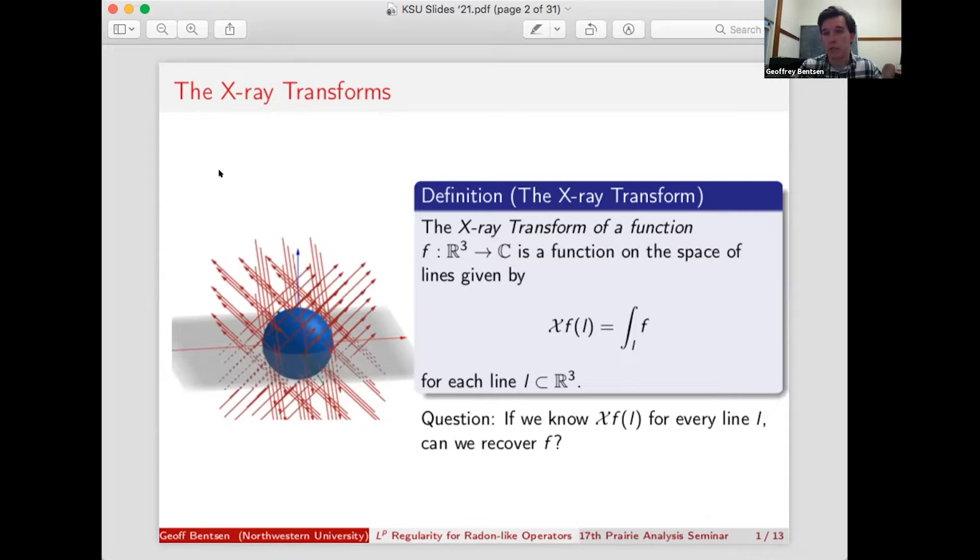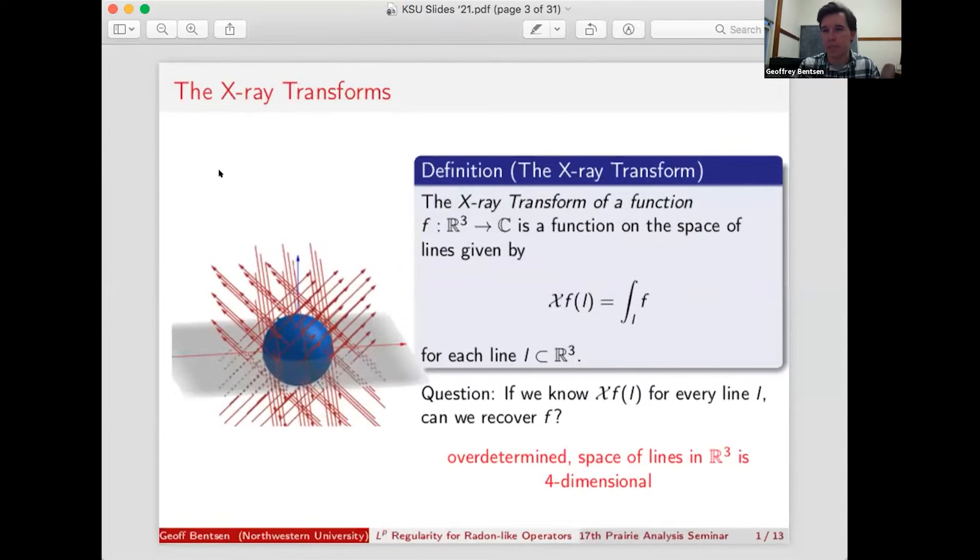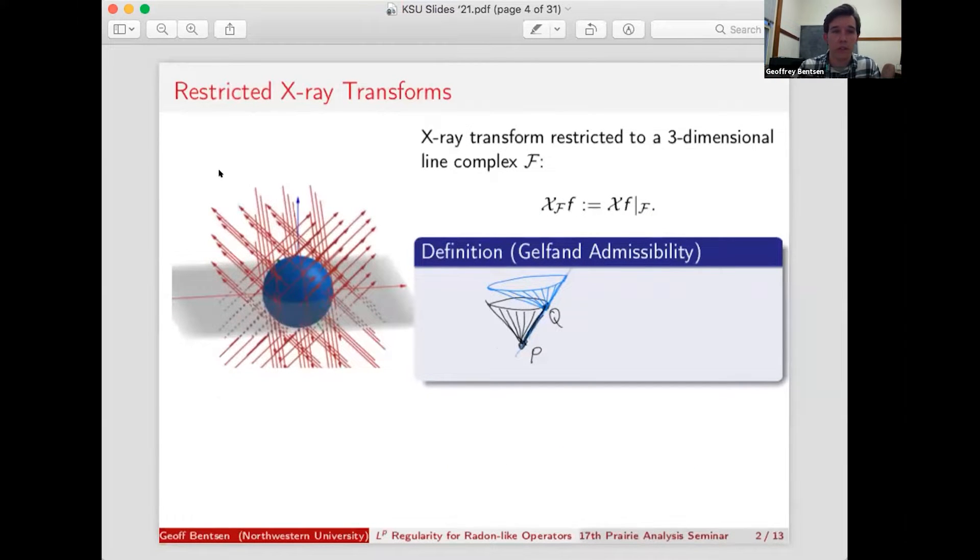Now, in two dimensions, this is a very simple question. It's called the radon transform. But in three dimensions, this problem is actually overdetermined, because the space of lines in R3 is a four-dimensional manifold. So what we can do to better pose this question is take our x-ray transform and restrict it to some three-dimensional family of lines, some sub-manifold. We call that a line complex, and we can ask: for which line complexes can we invert the restricted x-ray transform?